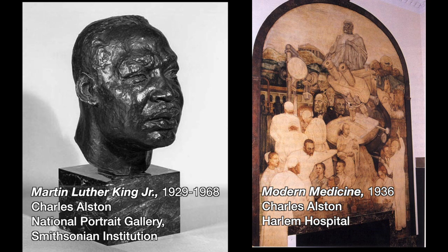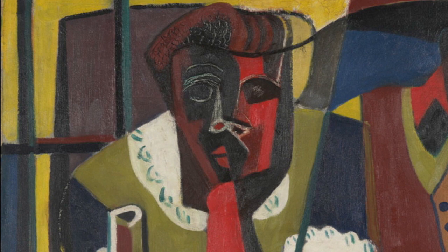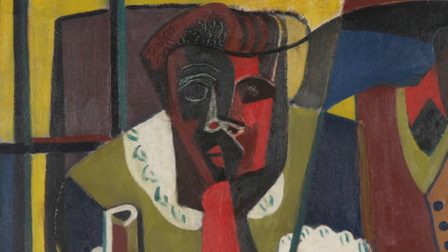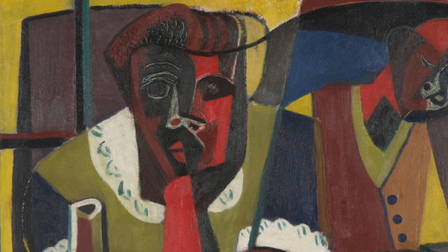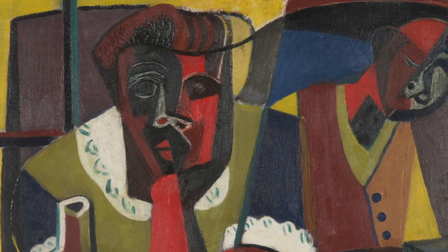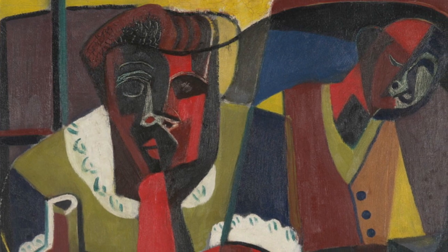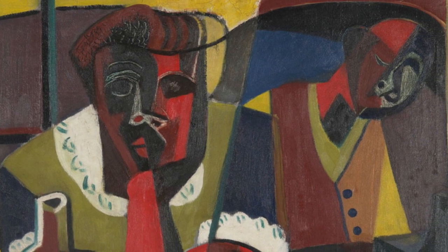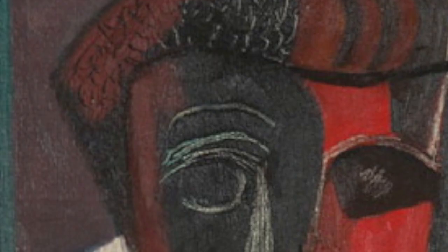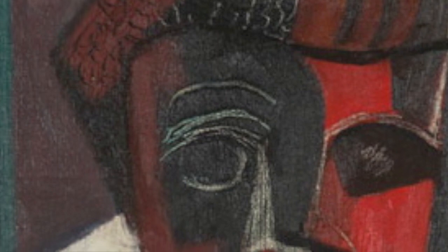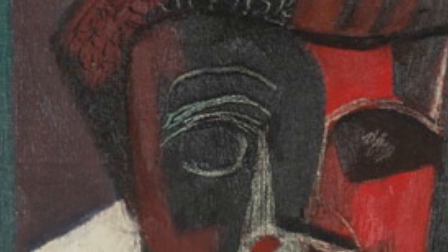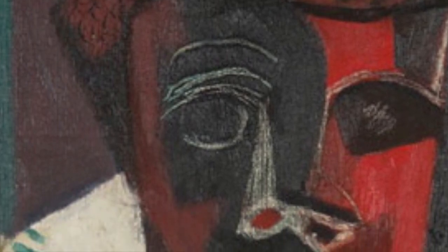Alston worked in several media, from sculpture to mural work. In this untitled painting, he evokes sculptural techniques in the forms with angular mask-like features and texture he literally sculpted or scratched into the paint.